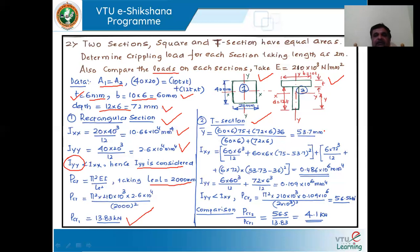Similarly, computing the values along both axes: 60 into 6 plus 70 into 6 will give the value of y-bar, the distance of the centroid along the y-axis. Now we can find the Ixx value by the equation 60 into 6 cubed by 12, plus 60 into 6, subtracting 53.7 from 75, the overall length, plus 6 into 72 cubed by 12, plus 6 into 72 into 53.73 minus 36. This gives the moment of inertia along the x-axis. Along the y-axis, since we have only one symmetrical section, that is 16 into 60 cubed by 12 plus 72 into 6 cubed by 12. Comparing Ixx and Iyy, the value of Iyy is less than Ixx, so Iyy is considered in the design.